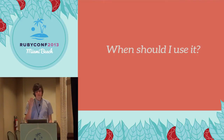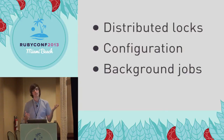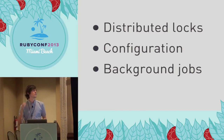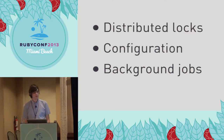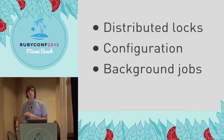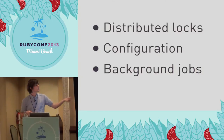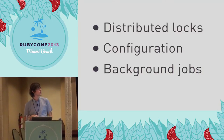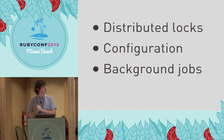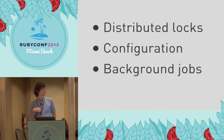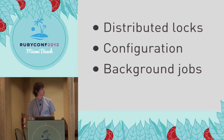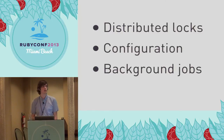When should you use it? Some common examples are if you need a distributed lock — if you're the only person trying to write to a file or something like that. A lot of people also use it for distributed configurations, so if you have a lot of servers sharing configuration information. An interesting one would be storing your background jobs in some kind of distributed store, where you could write those jobs to a database and use consensus to pull them out and acquire a lock on them.